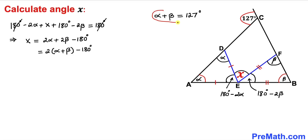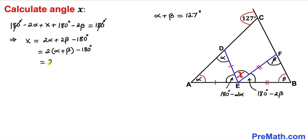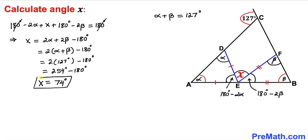We know that alpha plus beta equals 127 degrees from our previous step. Substituting, we get X equals 2 times 127 degrees minus 180 degrees, which equals 254 degrees minus 180 degrees, giving us simply 74 degrees. So angle X turns out to be 74 degrees.